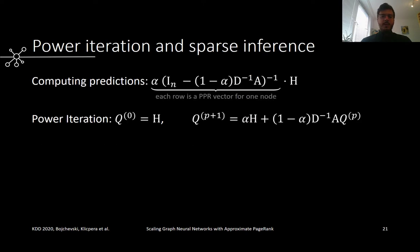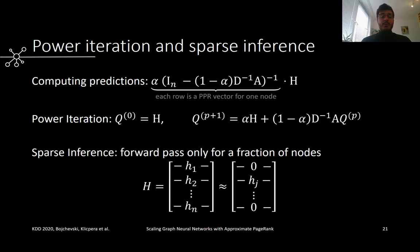For inference, instead of directly computing the predictions, which requires an expensive matrix inverse, we run a few steps of power iteration. This performs well in practice. Additionally, we propose sparse inference, where instead of computing the forward pass for all nodes, we randomly sample a small fraction of nodes and insert zeros for the remaining nodes. As we will see, this significantly reduces the runtime, especially for architectures where the forward pass is expensive, while maintaining good accuracy.